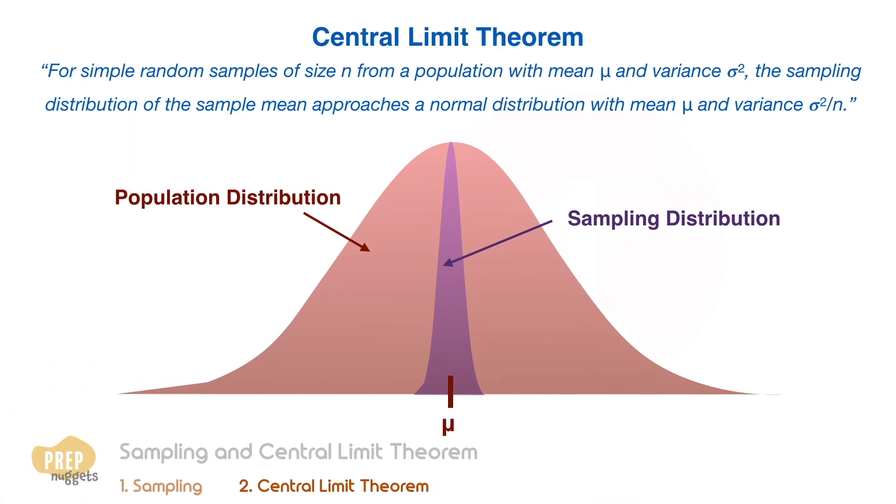remember these three rules. The sampling distribution will be approximately normal when the sample size is at least 30. The mean of the sampling distribution is equal to the mean of the population. And the variance of the sampling distribution is equal to the population variance divided by the sample size.